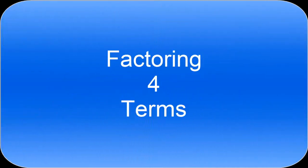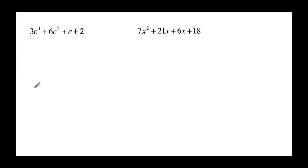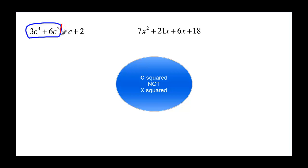This video will talk about factoring four terms. When we have four terms, we're going to factor by taking the first two terms, 3c³ + 6c², and then we're going to take the second two terms and see what we can have in common there.